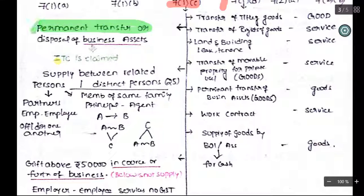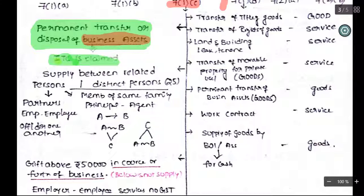Schedule 1, item one: Permanent transfer or disposal of business assets. If you make a permanent transfer of business assets and you claimed ITC with respect to it, then the provision is covering those business assets. Business assets cover normal goods and capital goods. If with respect to these assets you claimed ITC and these are sold, then you need to pay GST. If you sold them, there is a need to pay GST with respect to which you claimed ITC.